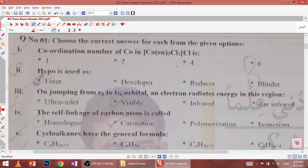First, the coordination number of cobalt in this compound is 6. Second, hypo is used in photography in the visible region, that's why we can see the colors in different patterns.